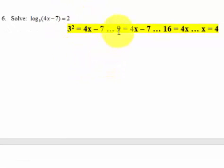So nine equals four x minus seven, plus seven, plus seven. You got 16 equals four x, x has to equal four.